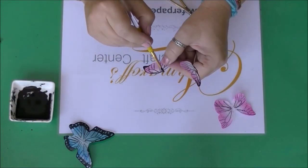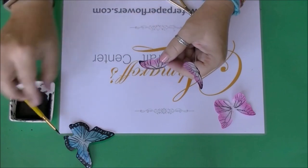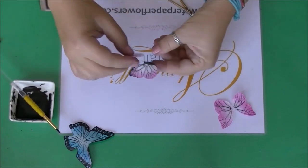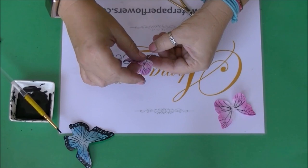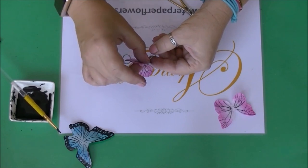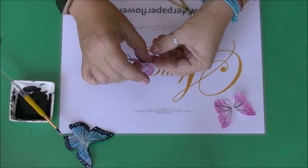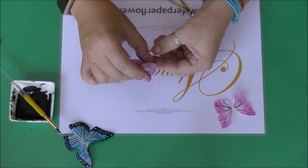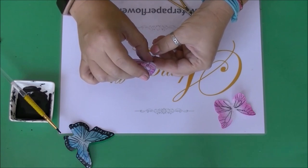Now do the same to the other part. Again, make sure that you position wings correct. Press, count one, two, three and voila!